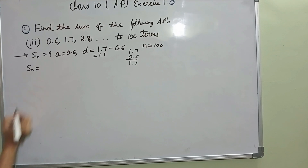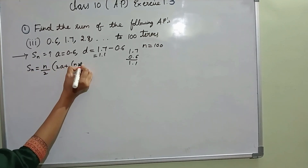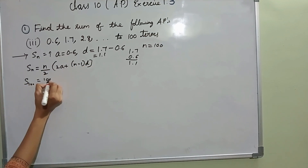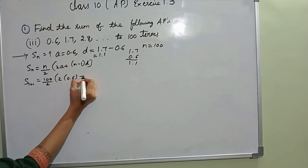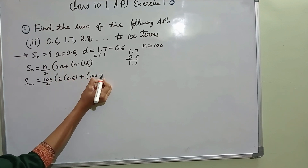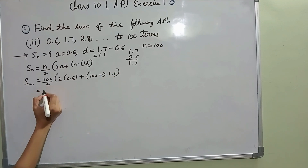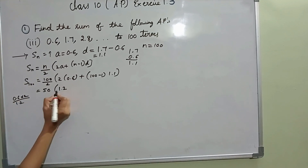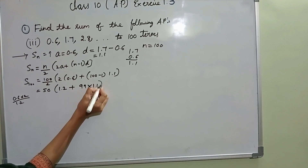SN formula: SN is given by N by 2 into 2A plus N minus 1 into D. Substituting: 100 by 2 — that is 50 — into 2 times A is 0.6, plus N is 100 minus 1, into D is 1.1. 2 times 0.6 is 1.2, plus 99 into 1.1.